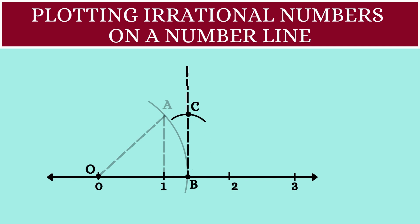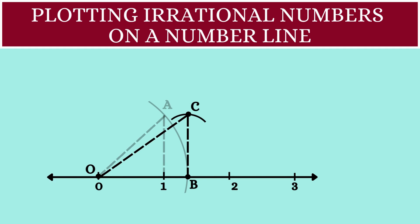Next, let's join the points O and C. Now, we are back to our Pythagoras theorem. Triangle OCB is a right-angled triangle. The hypotenuse is OC.